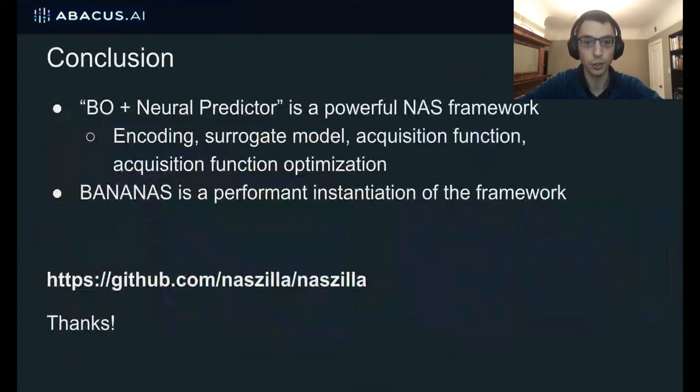Okay. So in conclusion, the BO plus neural predictor is a very powerful NAS framework. And we studied all components of this framework, the encoding, the surrogate model, acquisition function and optimization strategy. And then after we conducted this analysis, we created Bananas, which is a high performing instantiation of the framework. For more information, please come to the poster session or look at our paper or go to our GitHub repository where all the code is listed. All right. Thank you.